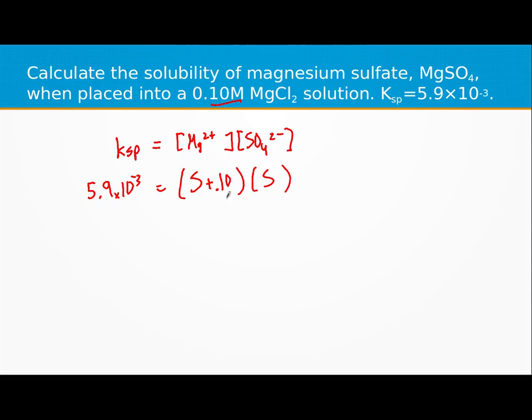That will turn into a quadratic equation, S squared plus 0.1S. Whenever we have that situation, a simplification we can try, which might add some error, is to assume the S is really small.